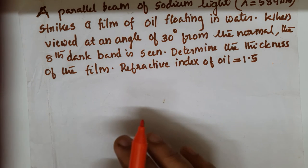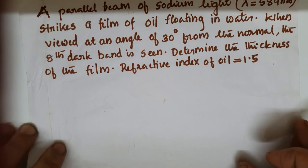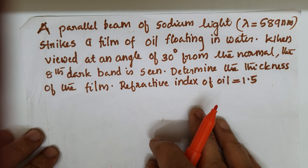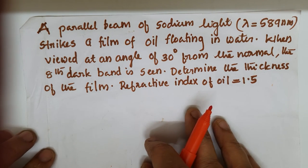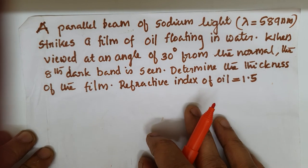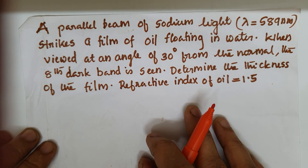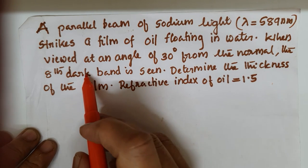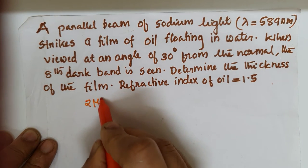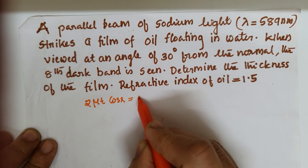So the two wavelengths absent in the visible spectrum are 6000 Angstroms and 4000 Angstroms. The next problem: a parallel beam of sodium light, lambda equal to 589 nanometer. The condition for the dark band is 2 mu t cos r equal to n lambda.